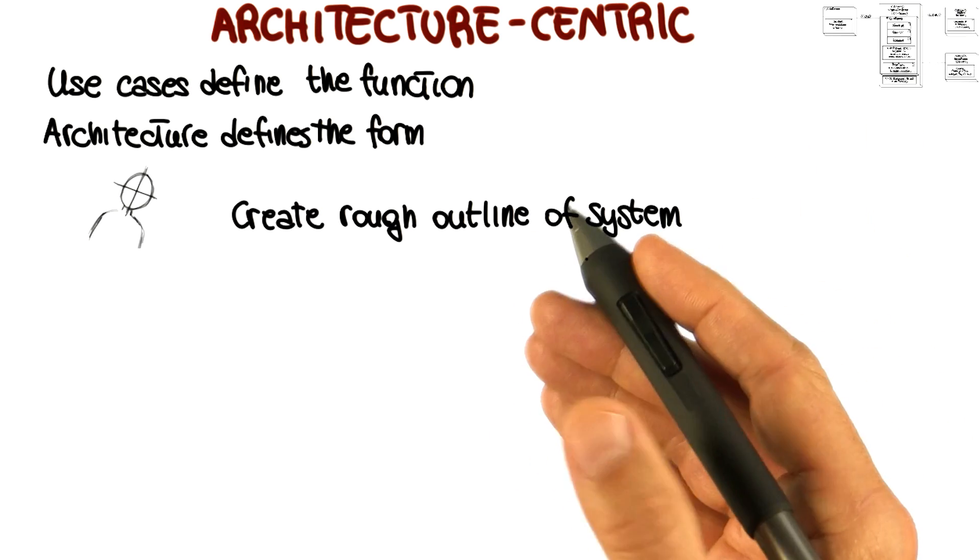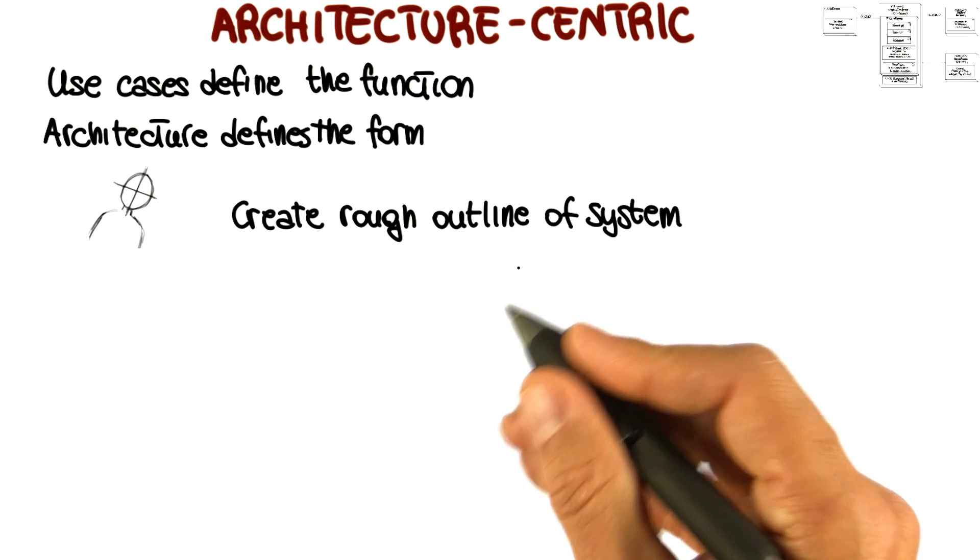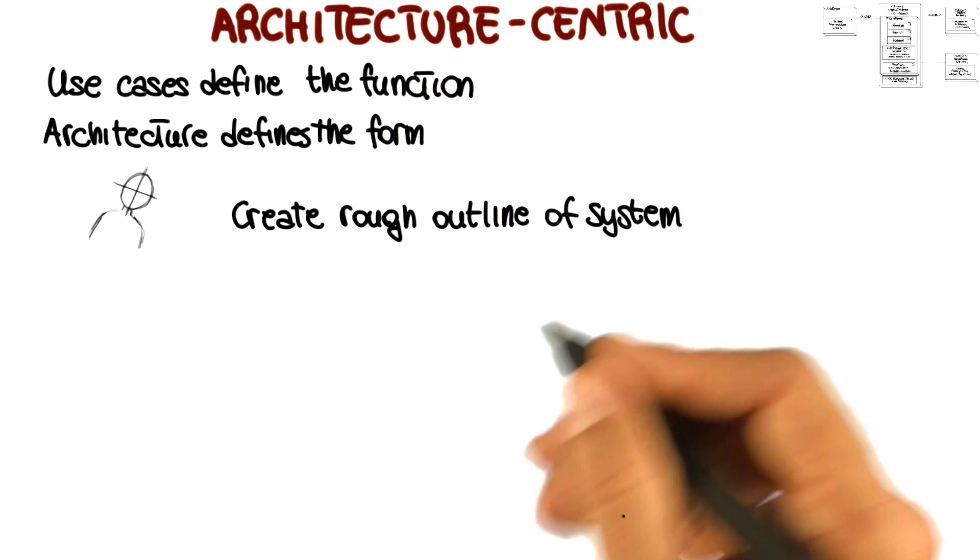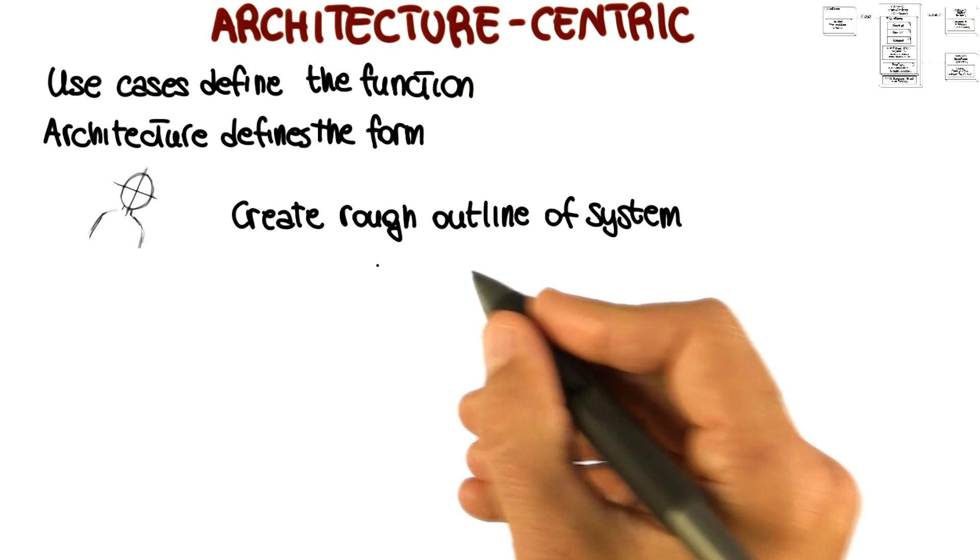For example, we model aspects such as the platform on which the system will run, the overall style, for example, whether it's a client-server or a peer-to-peer system, and so on.